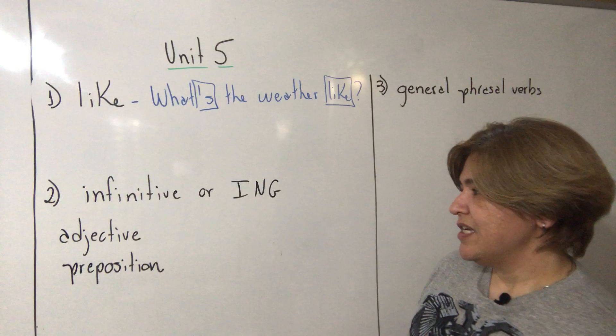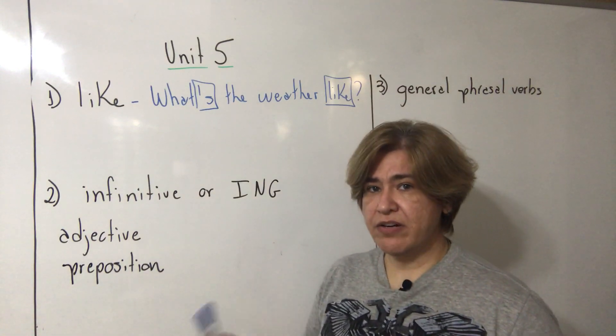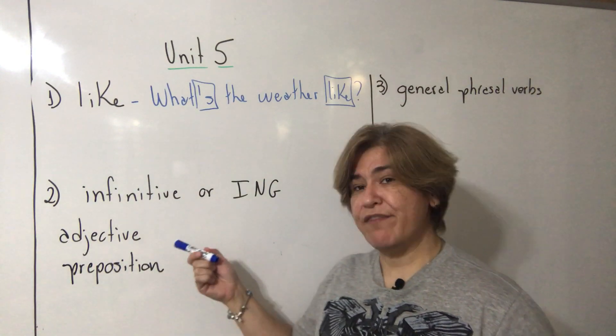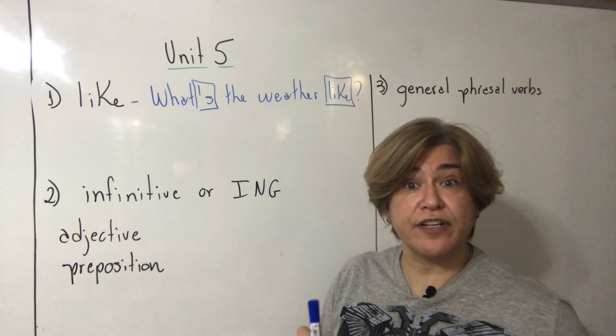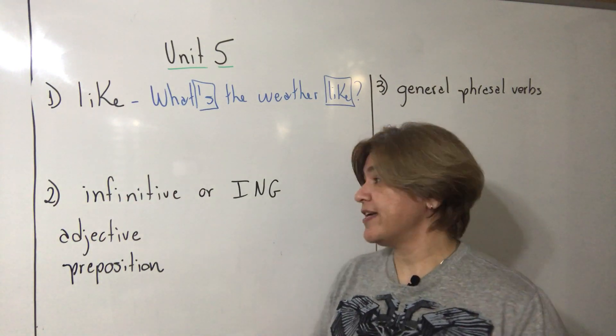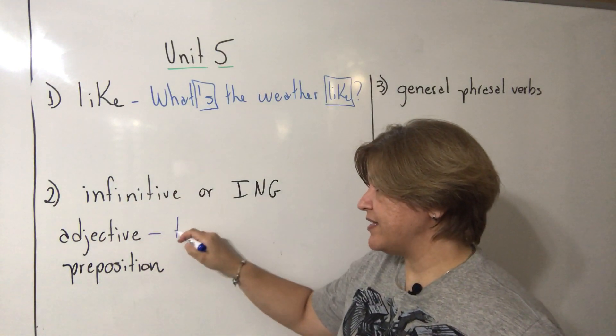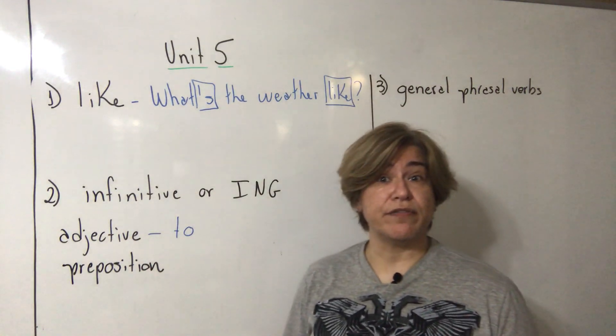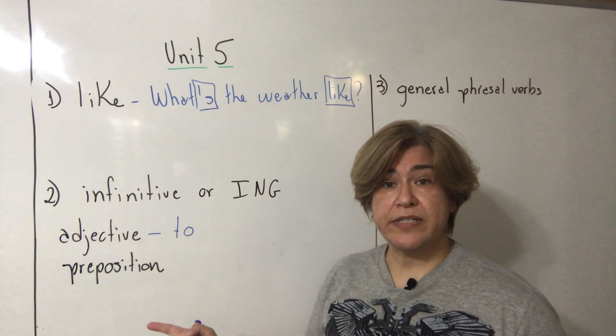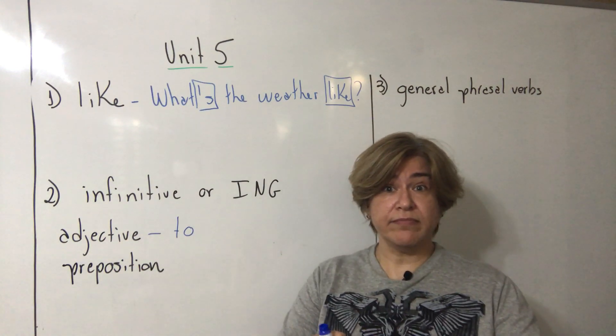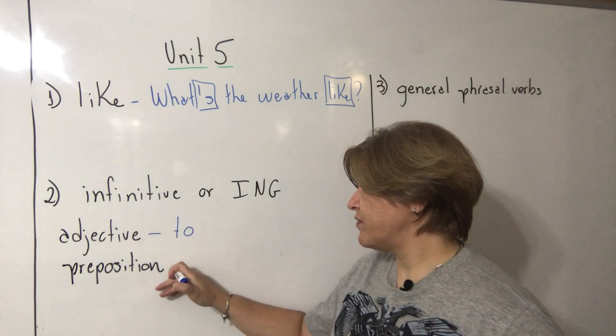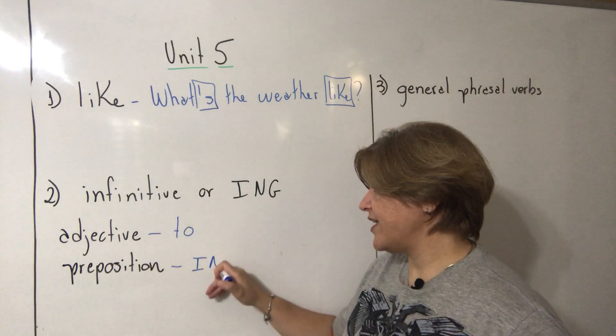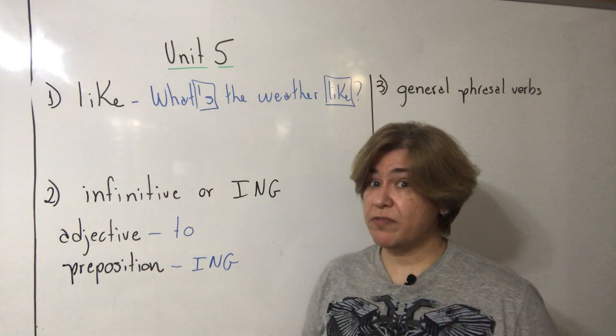In general, we studied when we have an adjective, the next verb is infinitive - you have to memorize infinitive. So infinitive, we say 'to'. It's nice to hear from you. When we have a preposition, the next verb finishes in -ING. Remember, it's not present continuous, it's infinitive finishing in -ING.